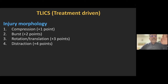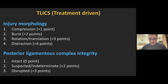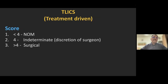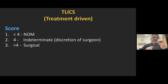In TLICS classification, injury morphology has four types: compression injury gets one point, burst injury gets two points, rotation or translation injuries get three points, and distraction injuries get four points. TLICS was the first system to emphasize the importance of the posterior tension band — if the posterior ligamentous complex is injured, that adds three points; if intact, zero points; if indeterminate, two points. If the total score is less than four, patients are treated non-operatively. If more than four, they require surgical treatment. A score of exactly four leaves the choice to the surgeon.